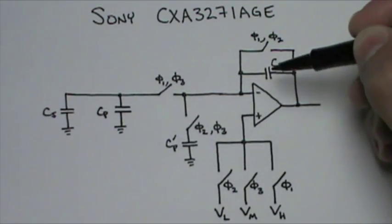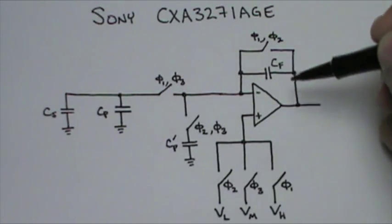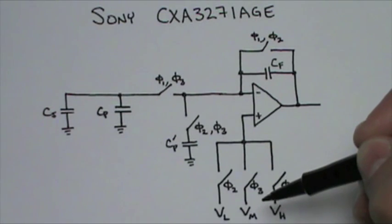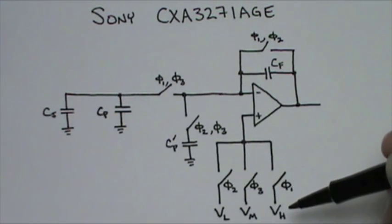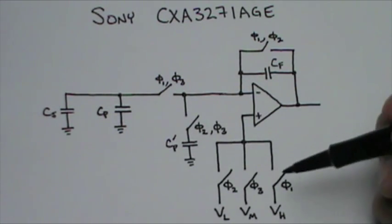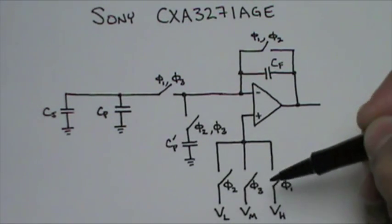We have an op amp, CF, a feedback capacitance that sets the amplifier's gain, and three voltages: VL for low voltage, VM for medium voltage, and VH for high voltage. The switches are switched in succession depending on whether it is presently phase 1, phase 2, or phase 3.